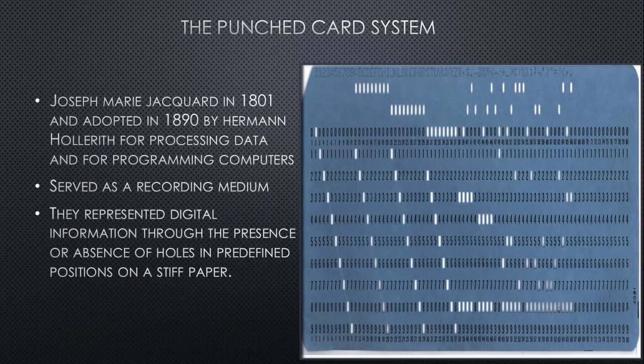The punch card system was brought into existence by Joseph Marie Jacquard in 1801. Jacquard used his invention — the punch card — in his machine, the Jacquard Loom. The Jacquard Loom was the first machine that used the idea of storage and programming, but it wasn't a calculating machine. It was a machine for warping threads in the manufacture of textiles. His idea of the punch card system was later adopted by Hermann Hollerith for processing data and programming computers.